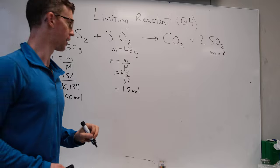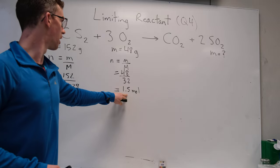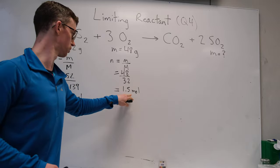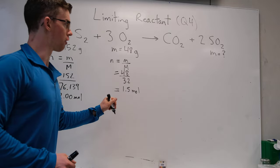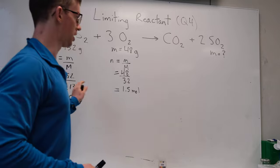So you might think perhaps it's the oxygen that limits how much product we can make because 1.5 is smaller than 2. We need to figure out how much product we can actually make with each of these amounts.